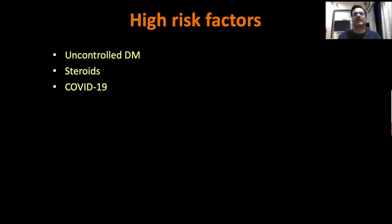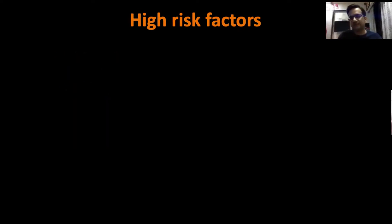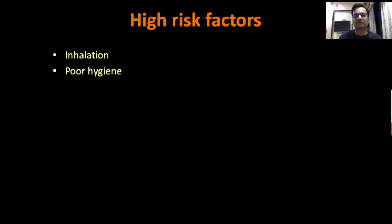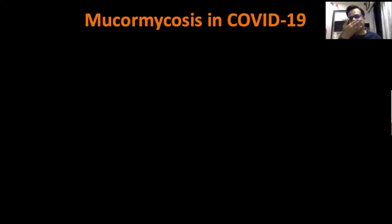COVID-19 adds to the risk — it's not a high-risk factor per se, but it leads to further deterioration in immunity. Especially uncontrolled use of steroids early in the disease when not required has actually led to this epidemic in our country. Transplant, immunotherapy, malignancy, and renal failure are also high-risk factors for any immunocompromised state. Another risk factor to keep in mind is inhalation — patients on oxygen therapy where the mask and tubing are not cleaned properly add to the risk. Poor mask hygiene, including masks that are soaked and not air dried or put in sunlight, can also lead to mucormycosis. There also appears to be a genetic predilection, because not everyone receiving steroids or who has COVID-19 gets it.